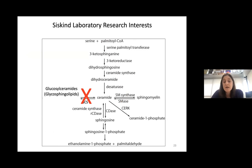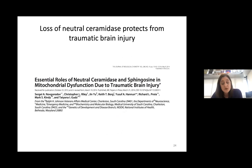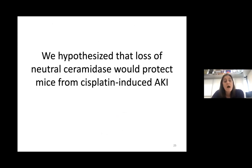So we blocked ceramide synthesis and improved the outcome; we blocked ceramide's metabolism to glucosylceramides and made things worse. We then looked at another arm of ceramide metabolism: neutral ceramidase. This interest came largely from work by Tatiana Gutz's lab, where she looked at the role of neutral ceramidase in traumatic brain injury — many of the same biological processes occur in TBI as in kidney injury. We hypothesized it might protect mice from cisplatin-induced AKI, even though that is counterintuitive given the lipid metabolism.